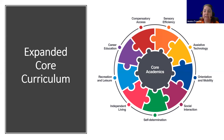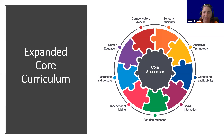From 1 o'clock to 2 o'clock in orange we have sensory efficiency — today's webinar topic. From 2 to 3 is assistive technology. At 3 o'clock in blue is orientation and mobility. At 4 to 5 in dark magenta is social interaction. At 6 o'clock in light green is self-determination. From 6 to 7 in bright pink is independent living. At 9 o'clock in light blue is recreation and leisure. From 9 to 11 is career education in purple. From 11 to 12 in red is compensatory access. This graphic comes from Perkins School for the Blind at perkins.org/school/ECC.